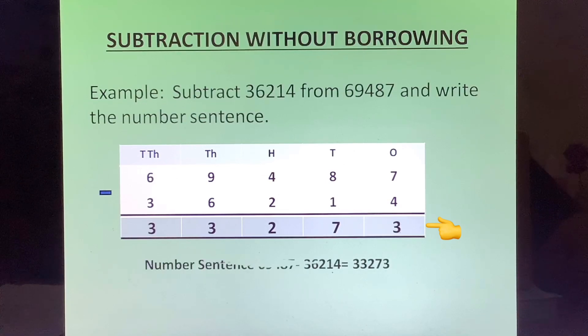After that 9 minus 6, that is 3, and in the last column we have 6 minus 3, which is 3 again. So the answer is 33273, and when we write it in the number sentence we will write 69487 minus 36214 is equal to 33273.